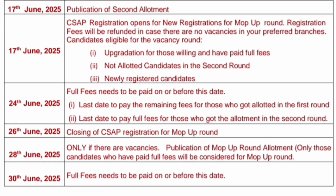17th June will be the publication of the second round seat allotment. Also on 17th June, open registration for the mop-up round begins. Registration fees will be refunded if no vacancies are available in preferred branches. Students eligible for the mop-up round include: those who have paid full fees and want an upgrade, candidates not allotted a seat in the second round, and newly registered candidates.